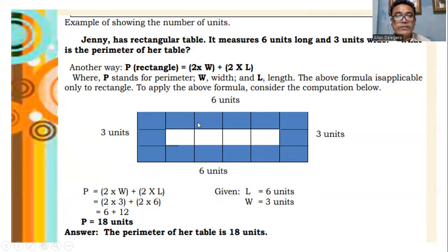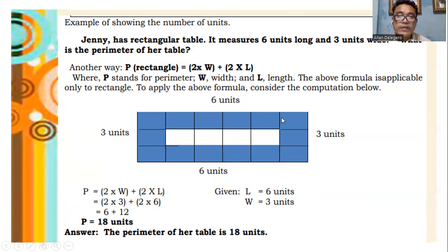We can verify by counting: counting the long sides gives 6 plus 6 equals 12, and the short sides give 3 plus 3 equals 6. So 12 plus 6 equals 18 units — confirming the perimeter is 18 units.